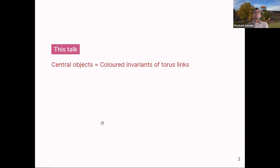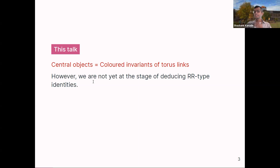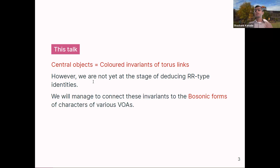So what is this talk about? My point — or rather, this has been known — is that you can do the same story where the central object is a colored invariant of a link. For this talk I'll take just torus links. You can analyze these invariants in two different ways and still get the two different sides of the Rogers-Ramanujan identity — the second Rogers-Ramanujan identity. However, I'm not yet at the stage of deducing Rogers-Ramanujan type identities, but I'll show you how you at least get the bosonic forms of characters of various VOAs.